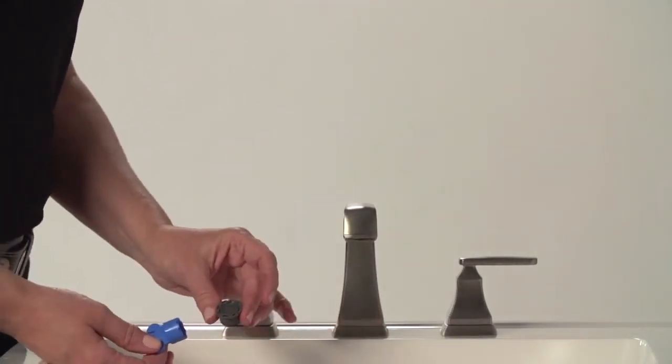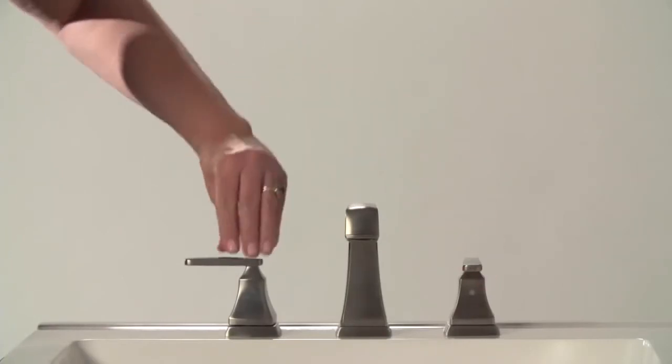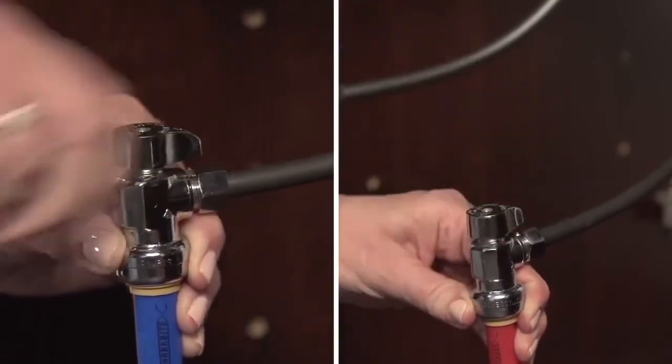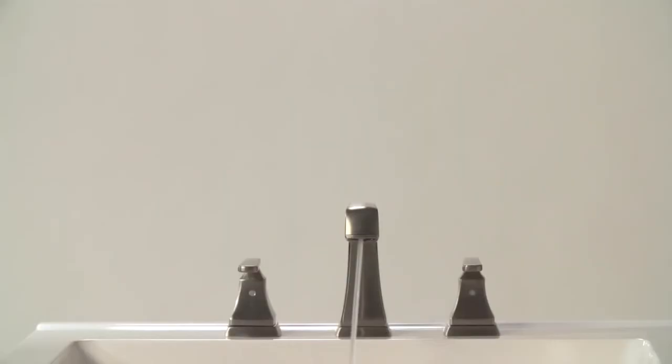Make sure both of your handles are turned on to full mix position and then turn on both hot and cold water supplies. Let the water run for a minute so that the lines are completely flushed of any debris before turning off both faucet handles.